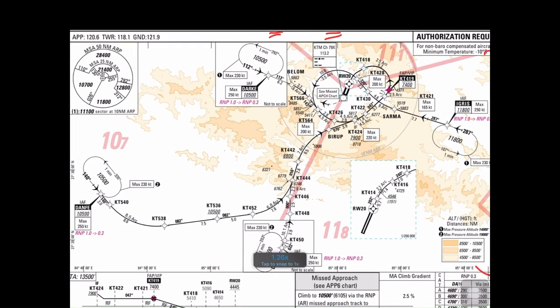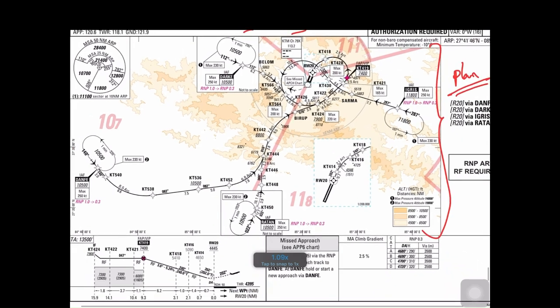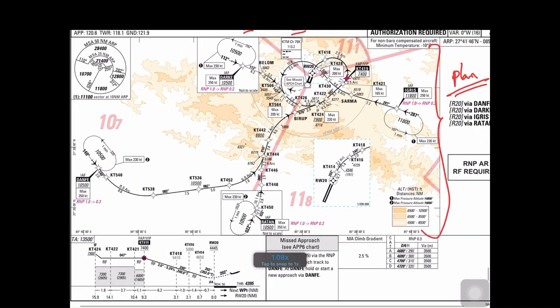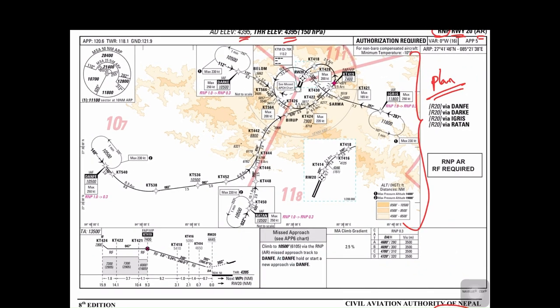That's the key information from the MSA. Now let's look at the arrival procedures. We have DAFE, DARKE, IGRIS, and RATAN — four different types of arrival procedures for runway 20 in a Required Navigation Performance approach.